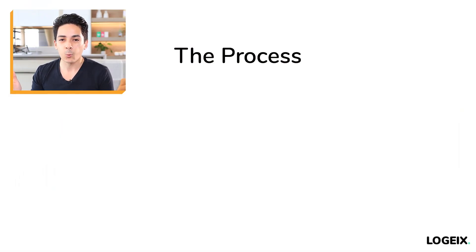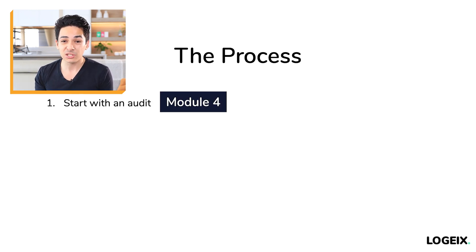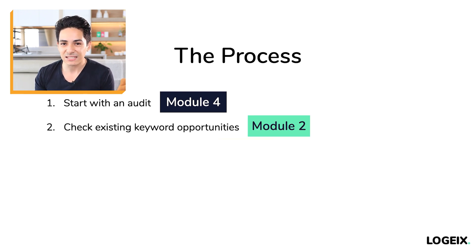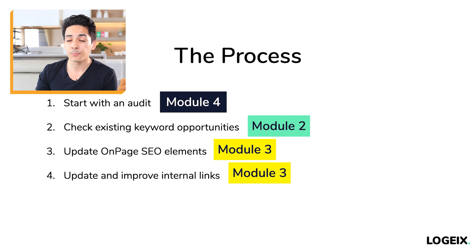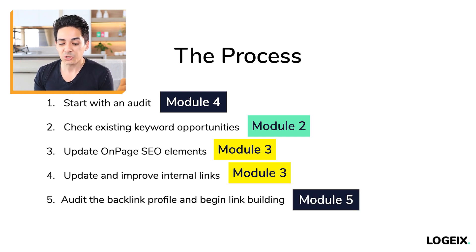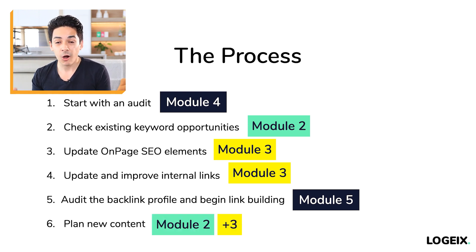That wraps up the full six-step process. Step one is the audit, covered in module four. Step two — check existing keyword opportunities — is in module two. Step three — update on-page SEO elements — is in module three. Step four — update and improve internal links — is also in module three. Step five — audit the backlink profile and begin link building — is in module five. Step six — plan new content — is in modules two and three. If you're enjoying this course, please like and subscribe so YouTube recommends it to more people. Next up is module two: keyword research.